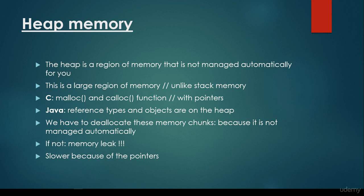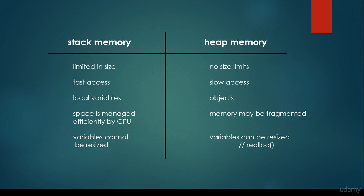And because it uses pointers, that's why it is slower than stack memory. So just to summarize again, we have two types of memory: the stack memory and the heap memory.